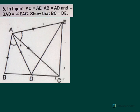In the figure, AC equals AE, AB equals AD, and angle BAD equals angle EAC. Show that BC equals DE.